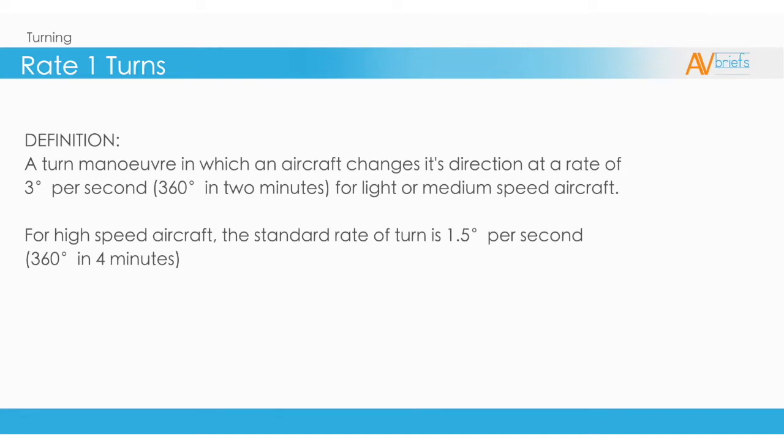When flying in instrument conditions, when visibility outside the airplane is not possible, turns are done at what is called Rate 1. The definition of Rate 1 is a turn maneuver in which an aircraft changes its direction at a rate of 3 degrees per second. This equates to 360 degrees, a full circle, in 2 minutes for light and medium speed aircraft.